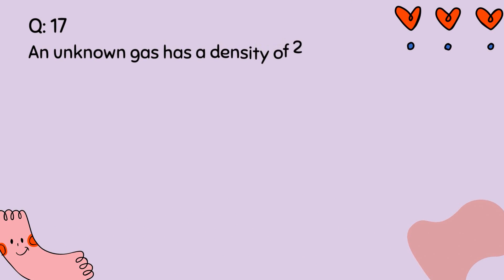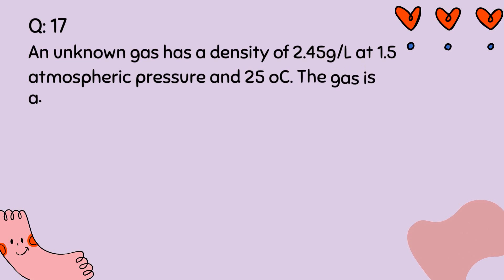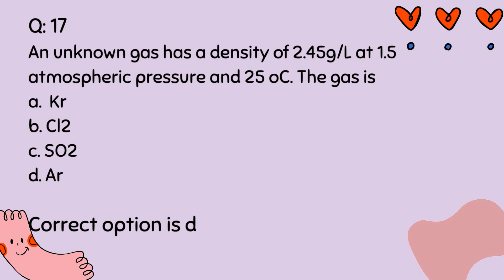Question number 17. An unknown gas has a density of 2.45 grams per liter at 1.5 atmospheric pressure and 25 degrees Celsius. The gas is: A. Krypton. B. ClO₂. C. SO₂. D. Argon. Correct option is D.